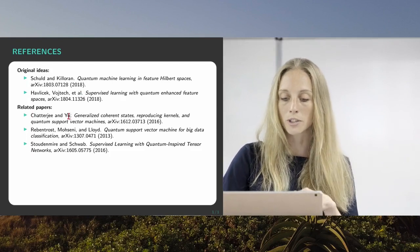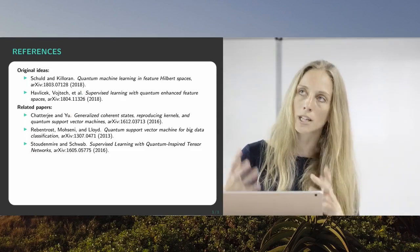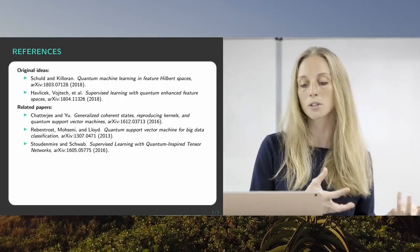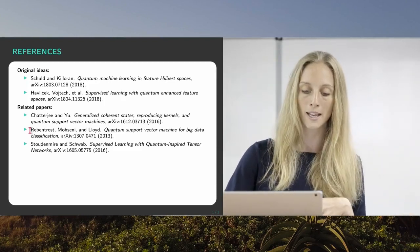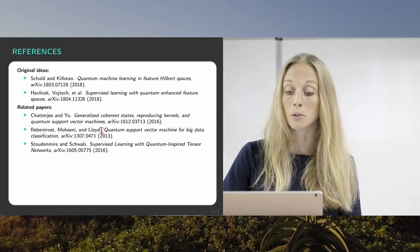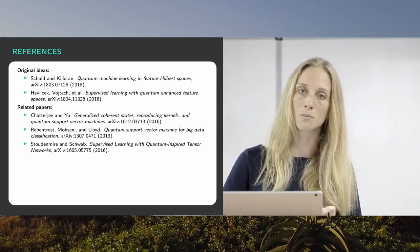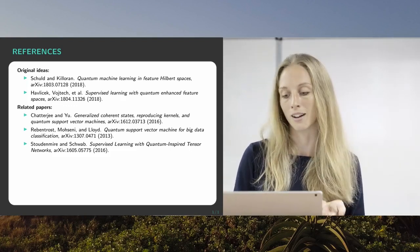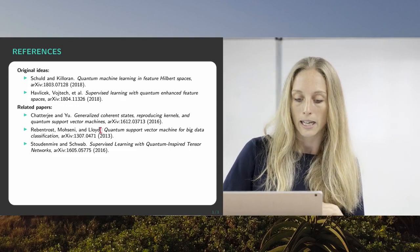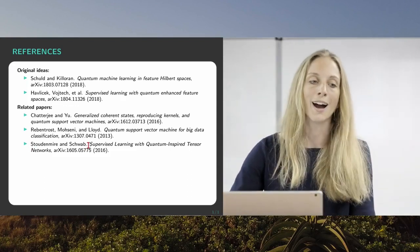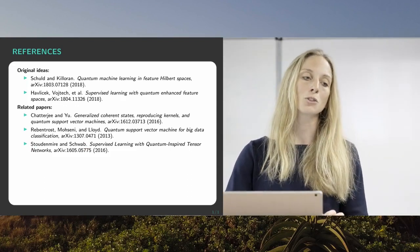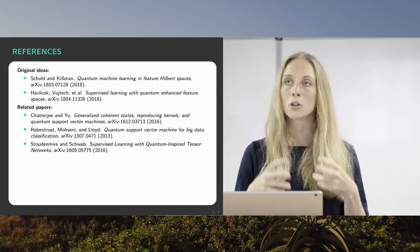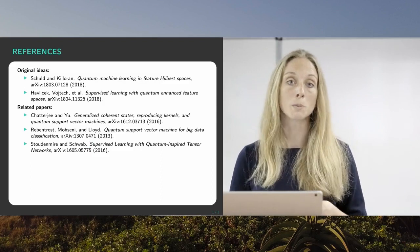For example Chatterjee and Yu have a paper where they are not coming from quantum computing but a little bit more from quantum mechanics, already knowing that there are similarities from kernel theory and quantum mechanics. Then we have Rebentrost, Moissini and Lloyd who show how a support vector machine can be quantized and run as a quantum algorithm. And we have Stoudenmire and Schwab who show from a more classical machine learning perspective how encoding data into quantum systems can be interpreted as feature maps.